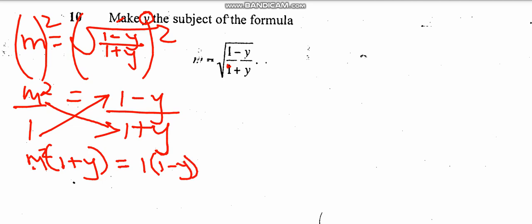Then this one times this one, I'm going to be left with m squared plus m squared y equivalent to 1 times 1, I'm going to get 1, then 1 times this one I'm going to get minus y. So after this you need to be careful because our question is saying make y the subject of the formula.